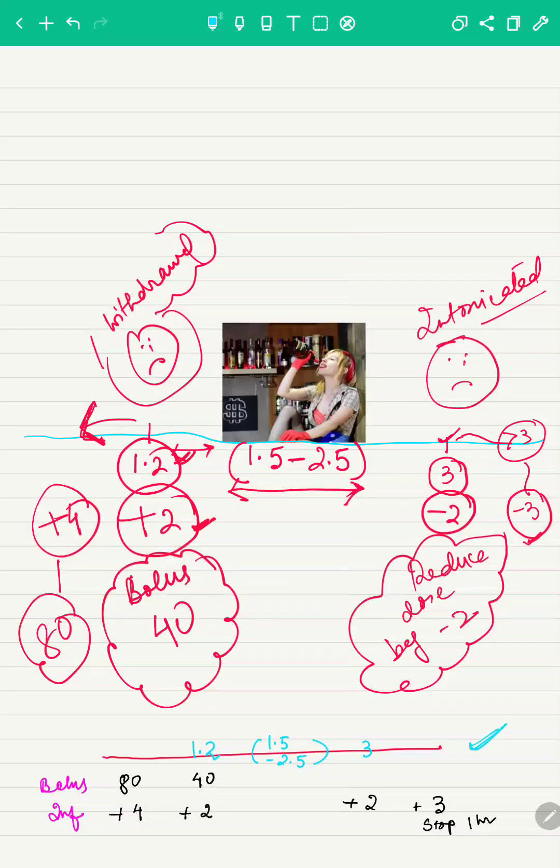So this in a nutshell is what you have to remember. This is the allowed range of alcohol for the lady. This much is what we have to desire. In case she comes intoxicated up to 3, then in that case we decrease the dose by 2. In case the intoxication is more than 3, then we have to decrease. So this is the decrease section. So we have to decrease the dose by 3.